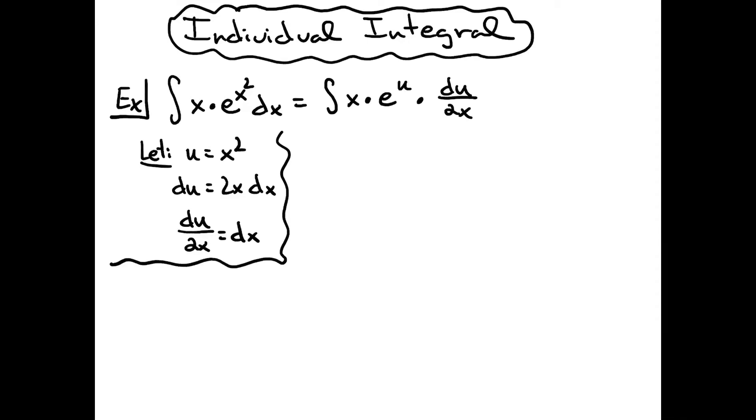Now from there, what that's going to allow us to do is cross out the x's and we're also going to be able to pull out a 1/2 in front of the integral. So we'll have 1/2 the integral of e to the u du.